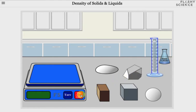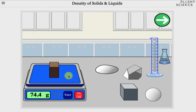Turn on the mass balance by clicking its power button, then wait for it to initialize and click the tare button to zero the display. You can then measure the mass of the samples by clicking and dragging them onto the mass balance. We now have the cuboid on the balance and it shows a mass of 74.4 grams.